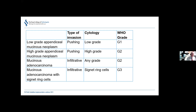The WHO grades are: G1 for low-grade (LAMN), G2 for both HAMN and mucinous adenocarcinoma, and G3 mainly reserved for signet ring cell lesions, although a very poorly differentiated mucinous adenocarcinoma with sheets of signet ring cells could also be considered G3. Adenocarcinoma with signet ring cells is classified separately because it carries a worse prognosis.